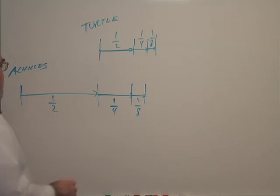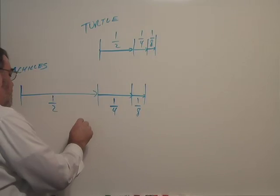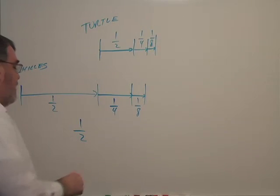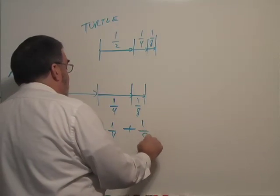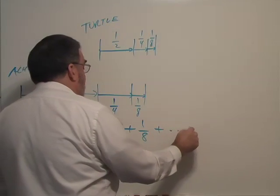Let's think about the time it takes. In the first stage, they've run one half of a minute. In the second stage of the race, they've run one fourth of a minute. In the third stage, they've run one eighth. And suppose I keep that up.